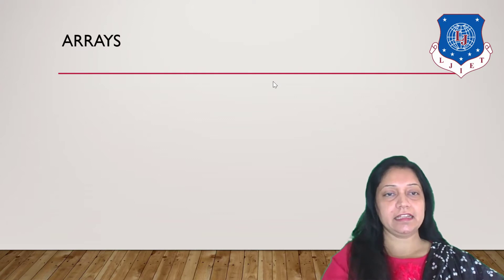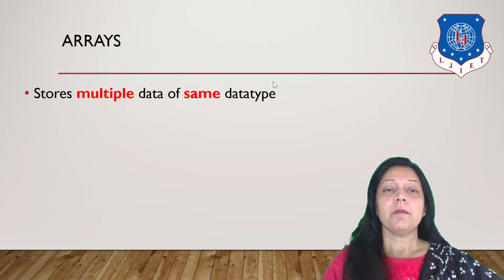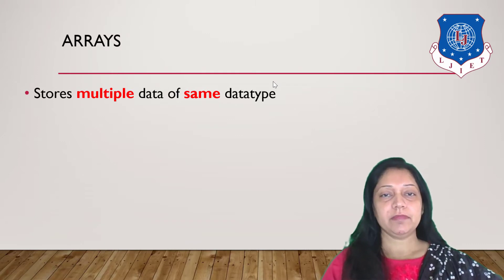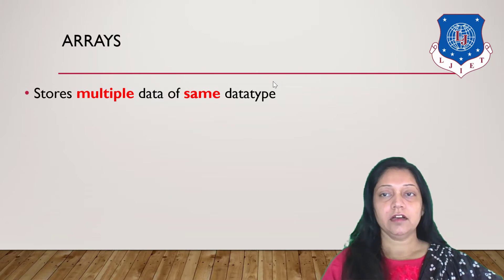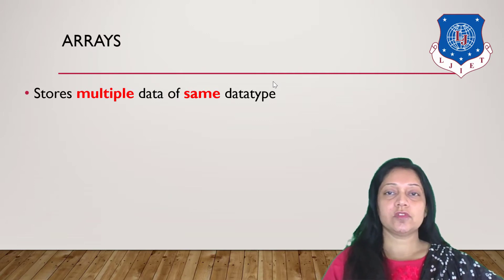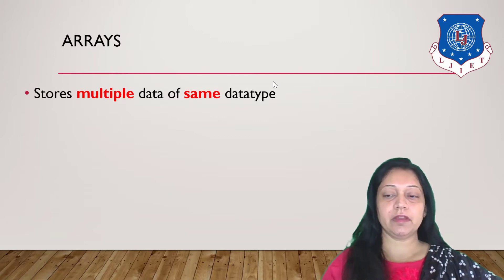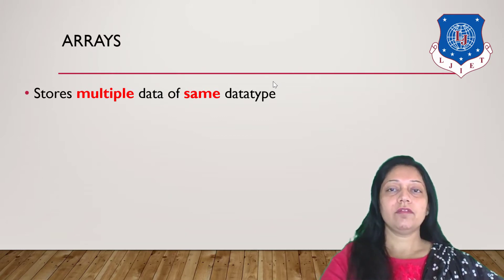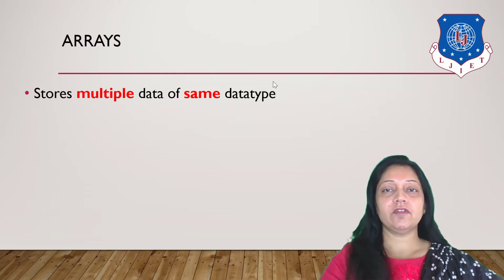First we'll start with Arrays. Arrays store multiple data of the same data type — it's a variable which can store a large amount of data. It can be 10 values, 1000 values, or fewer, but all must be of the same data type. It can store 10 integer values or 1000 float values, but it cannot store one integer and one float value in the same array.